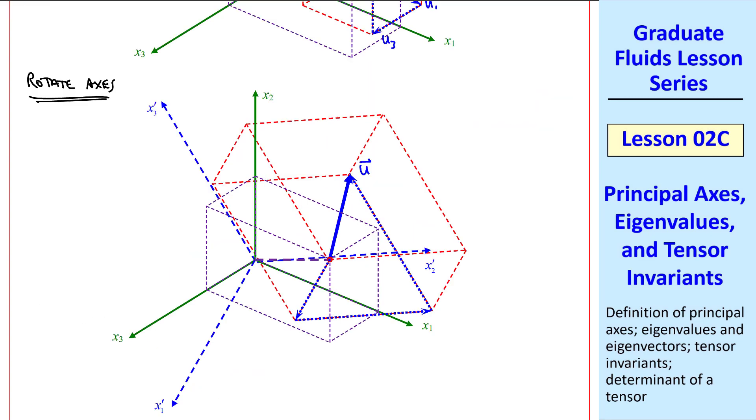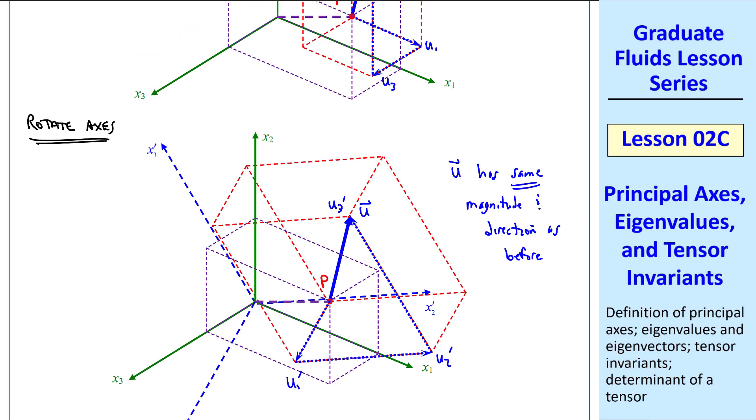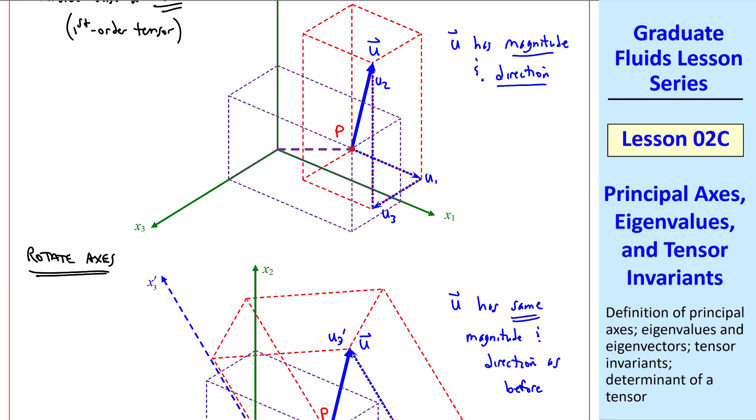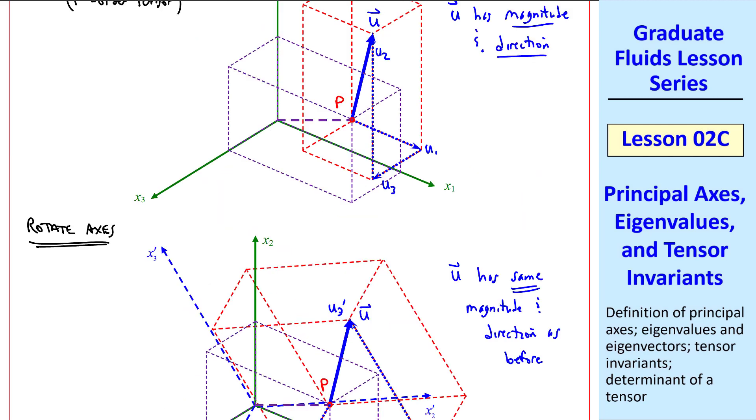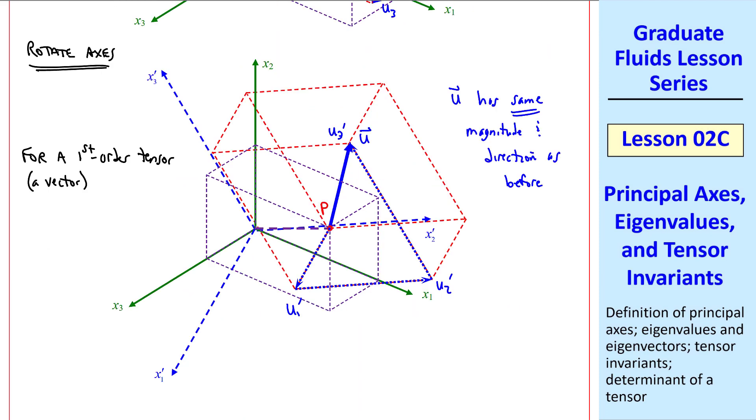Now let's rotate the axes. I have the same vector u at the same point, P, in the flow. But now I've tilted to these primed axes. And again, I drew a box to help you visualize. In primed coordinates, this component is u1', this one is u2', and this one is u3'. Vector u has the same magnitude and direction as before. We haven't changed any of the physics in the flow. So this velocity vector at point P is identical to this one at point P. All we did was rotate our axes. So components u1', u2', and u3' are different than u1, u2, and u3. But the magnitude and direction have to be the same. So for a first-order tensor, a vector, there are two tensor invariants. Invariants means that they don't change when you rotate the axes. The two tensor invariants are magnitude and direction.